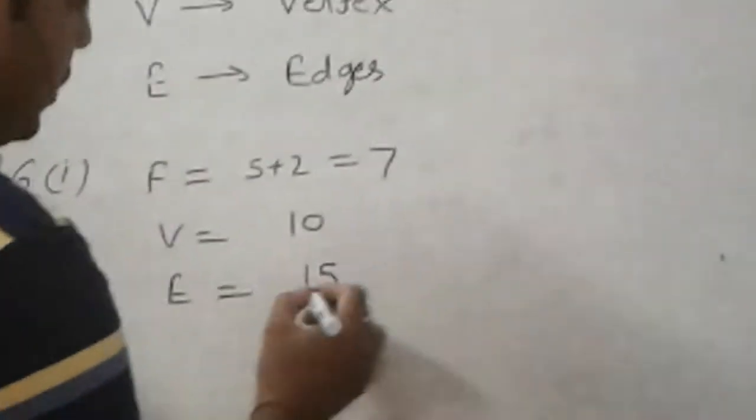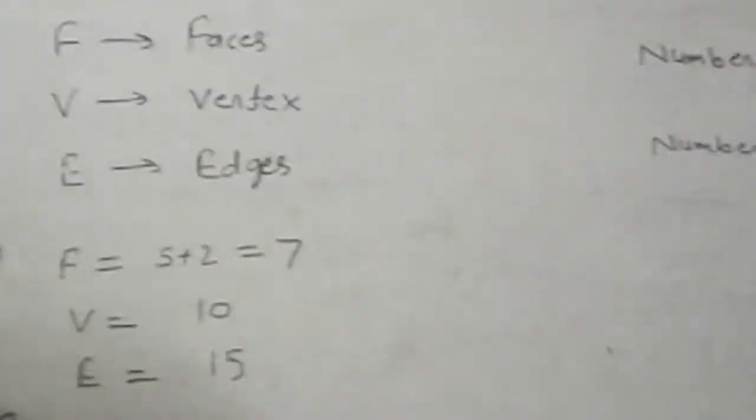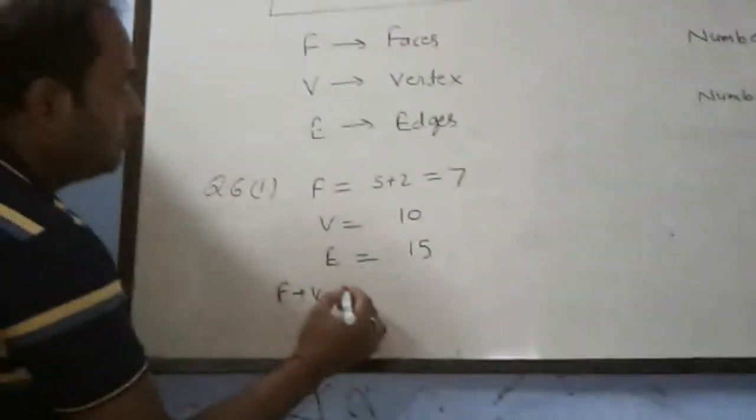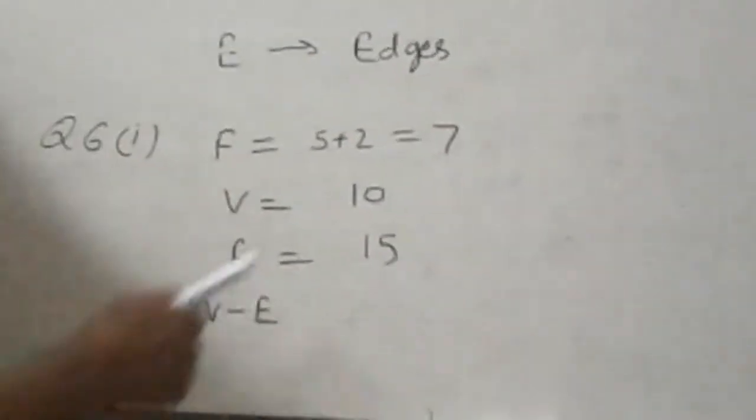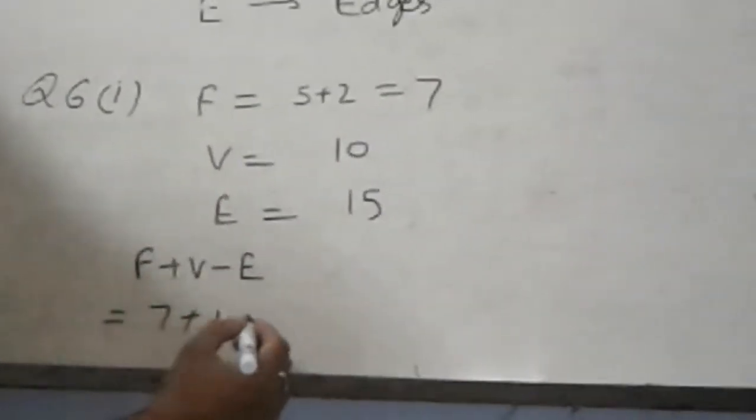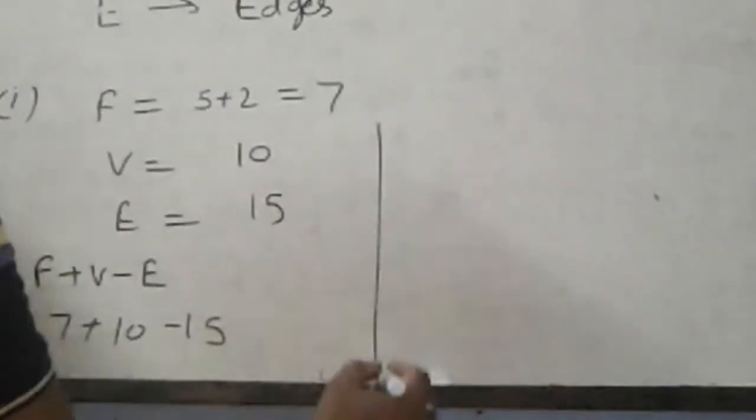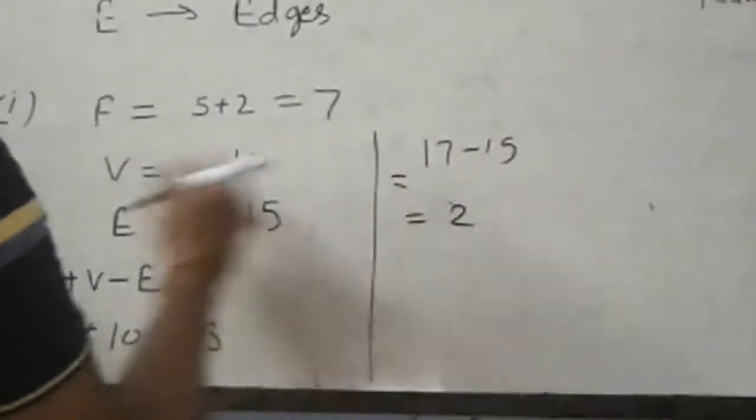Edges is 15. Now we will find the value of F plus V minus E, equal to F is 7, the value of vertex is 10, minus 15. So in solving, 17 minus 15 equals 2, which means it is verified.